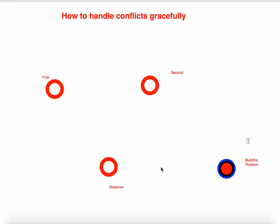Once you are done, come back to the first position. Sit in your chair which represents your first position and integrate all the learnings. Take your time. Once you are done, you can get up from the chair, and you will realize that during this whole process you went through a massive inner shift. People get new perspectives, and with this new perspective, new insight, and new learnings which you just integrated, you will automatically start behaving differently — start behaving in the best interest of all the parties, as if it is a win-win situation.